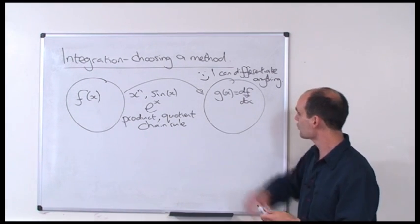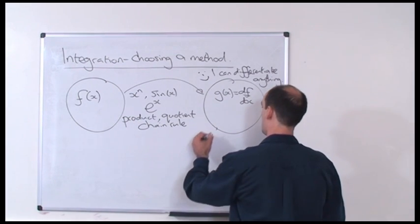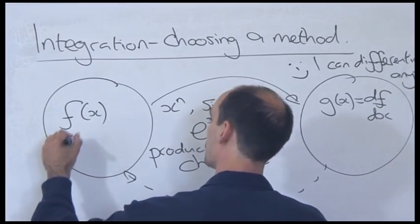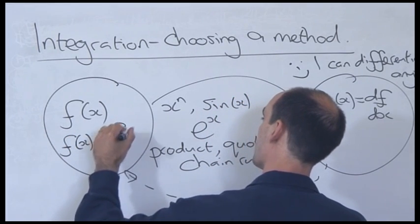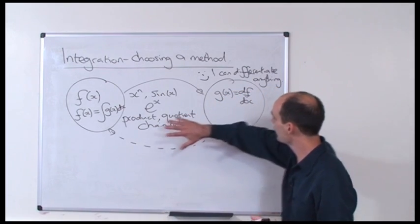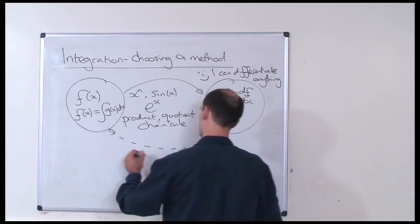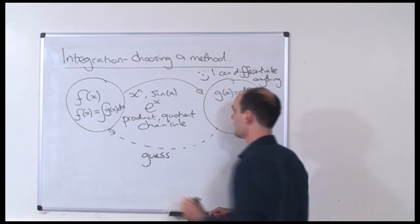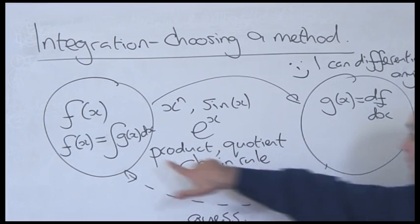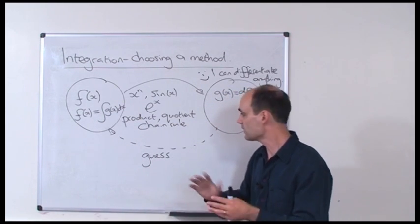But when you're trying to integrate, you're trying to do the reverse of this process — going backwards, trying to find some function of x which is the integral of g of x dx. And because it's the reverse of this process, essentially what you're trying to do is make a guess. You're trying to guess what function it is you would have to differentiate in order to find g of x. Because it's this sort of backward process, it's very much harder.